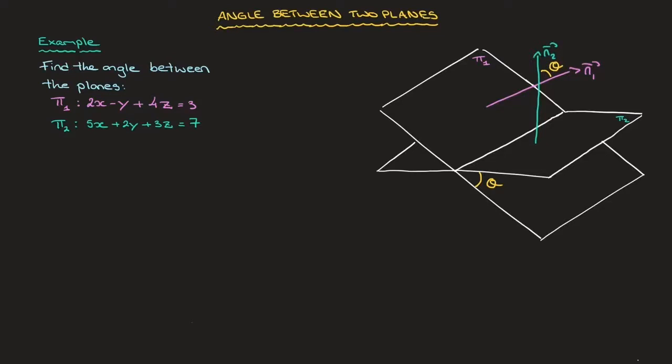So let's work through this example. We have the equations of each of the two planes here, and they're written in their Cartesian form. Indeed, plane 1's equation is 2x - y + 4z = 3, and the second plane, π₂, has equation 5x + 2y + 3z = 7.